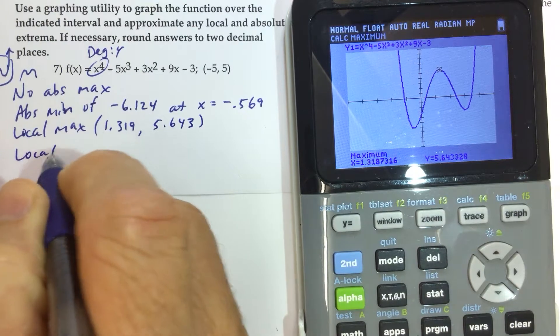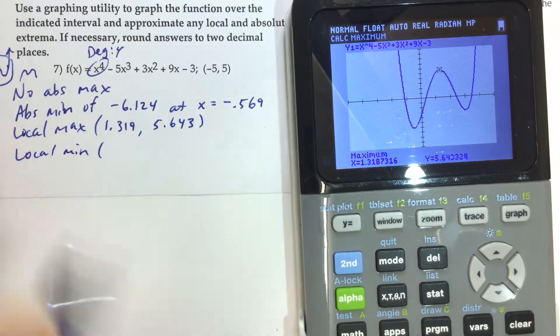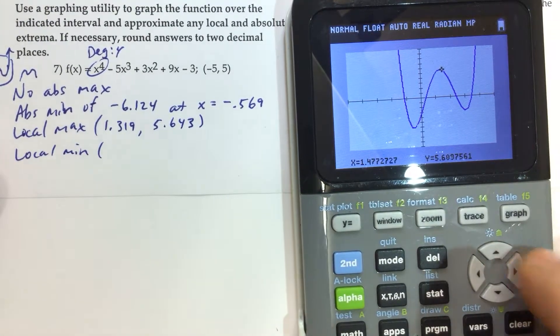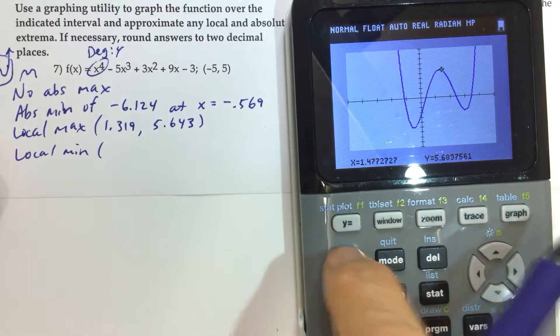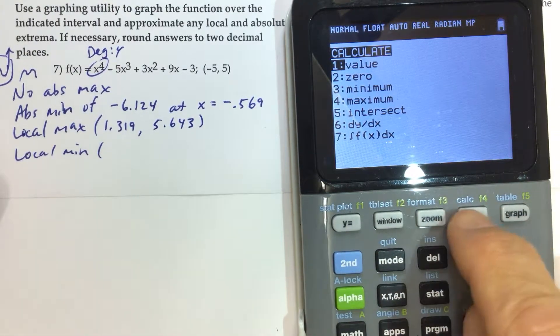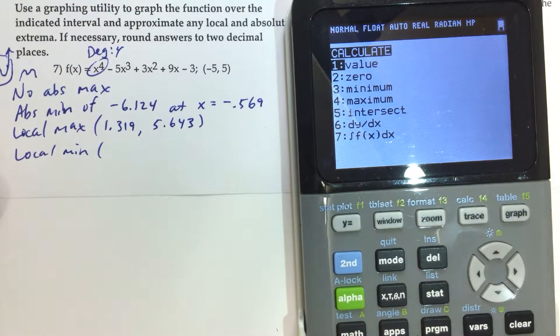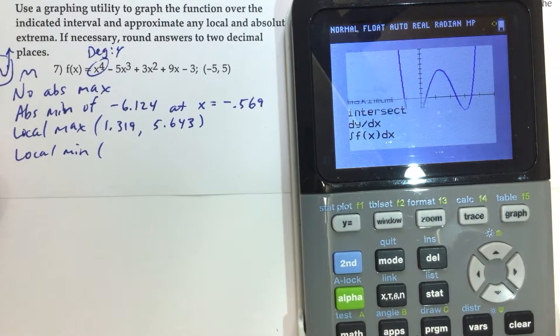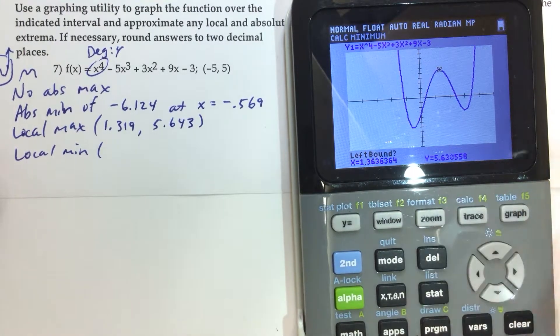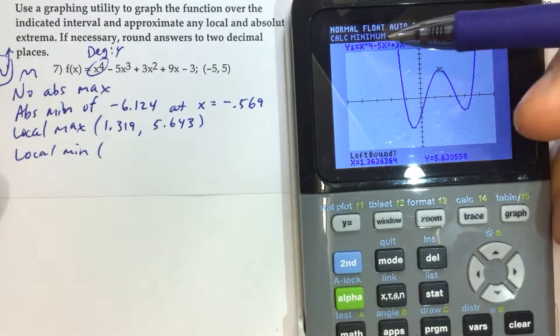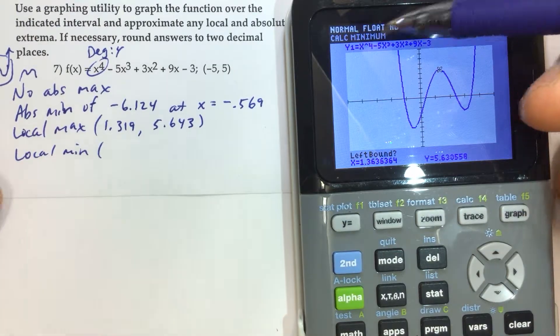And then finally we have a local min over there. And we're going to find that by second calculate or second trace that accesses the calculate. I'm going to type in 3. I'm just going to push a 3 and it's going to find, it tells you right up here, by the way, what it's going to do. So maybe you made a mistake.